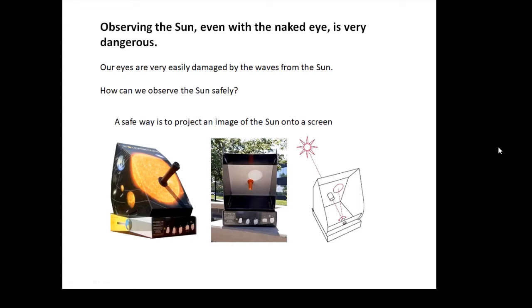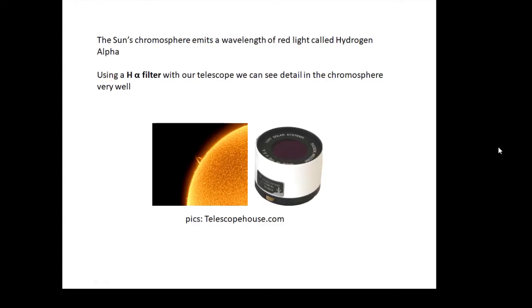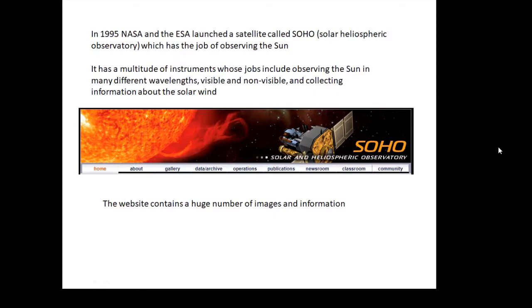Projecting an image is the safest way. You can also get special filters for your telescope. There's a hydrogen alpha filter, and if you use one of these, we can see details in the chromosphere very well. Very expensive - that one is about a thousand pounds.